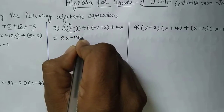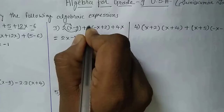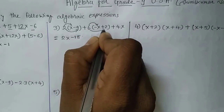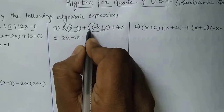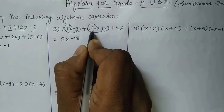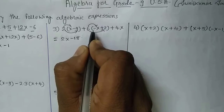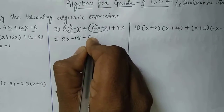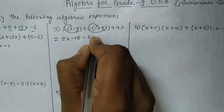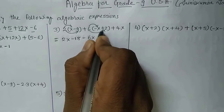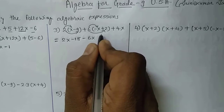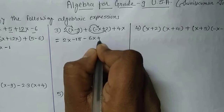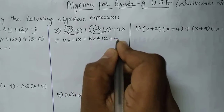Similarly, after the plus sign, 6 will multiply with x as well as with 2. Now this is minus x, so minus into plus converts it to minus 6x. This is plus, so plus into plus gives plus 6 times 2 equals 12. So we have plus 12, plus 4x.